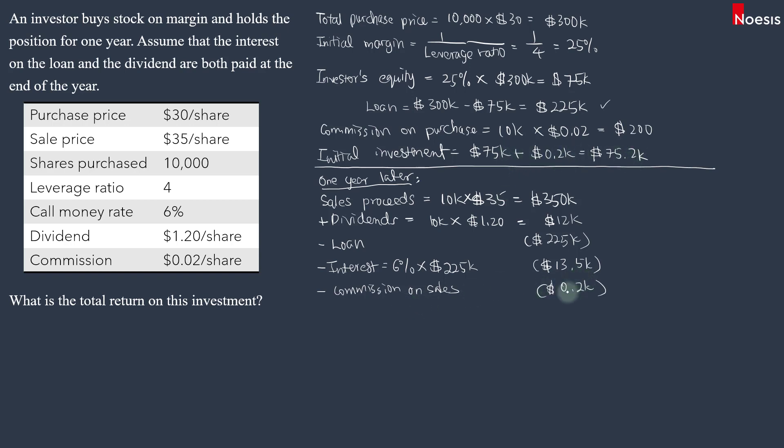Lastly, we will just net off the amount here. So if you take the net amount, this is $123,300. That's your ending investor's equity. So the investor's equity has increased from $75,200 to $123,300.